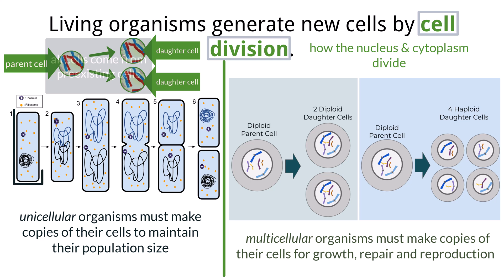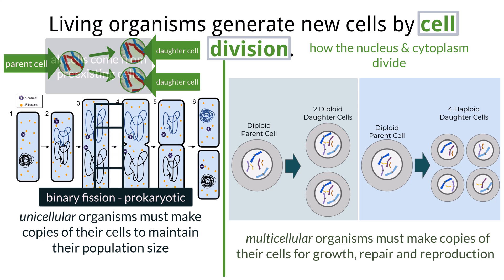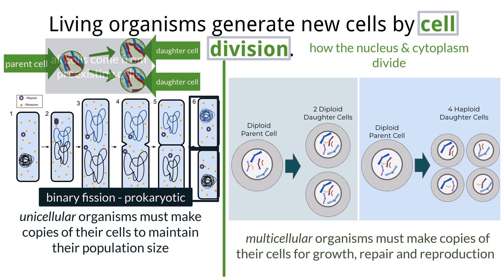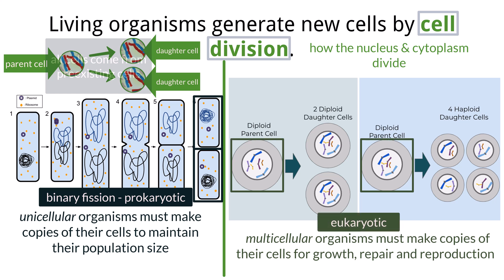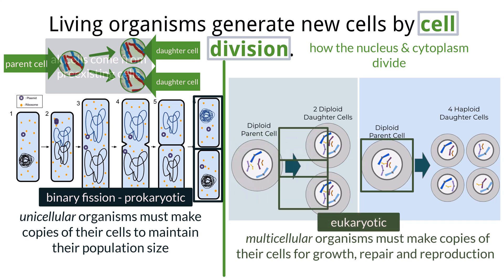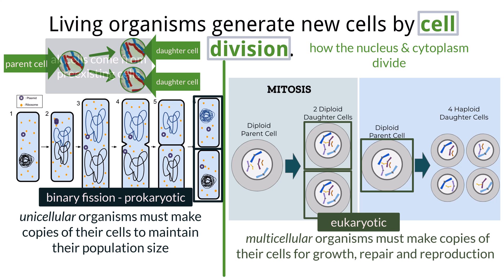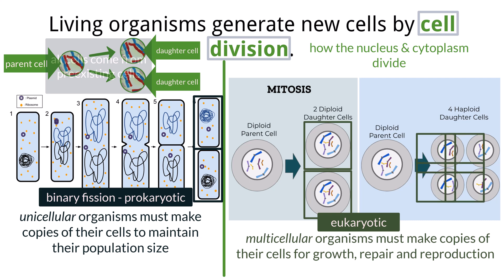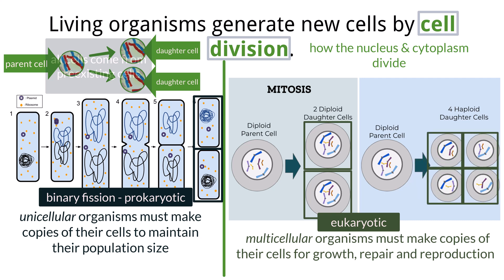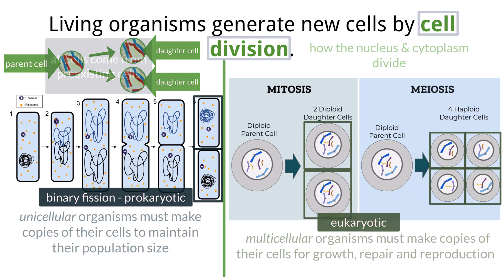In prokaryotic cells with a single chromosome of DNA, the cell divides by binary fission, where DNA is copied and the cell simply divides into two daughter cells. In eukaryotic cells, where there are multiple chromosomes, the cell will undergo mitosis. For sexually reproducing organisms, egg and sperm, two divisions are required, producing four daughter cells. This process is called meiosis.